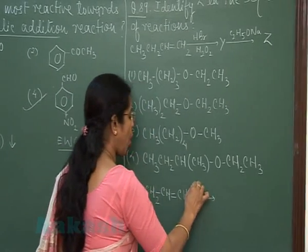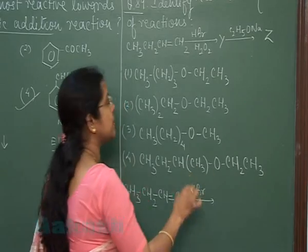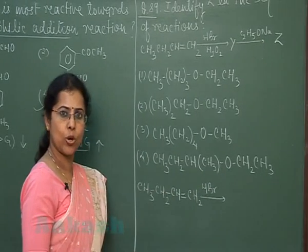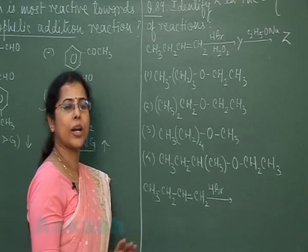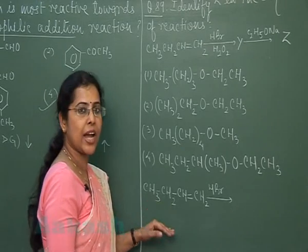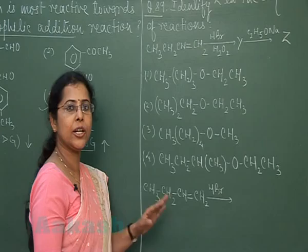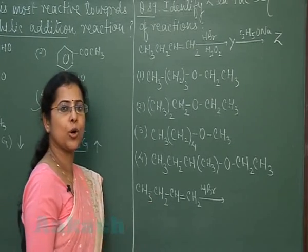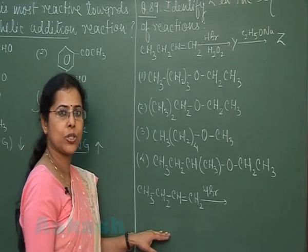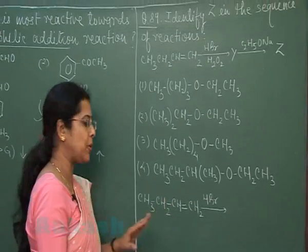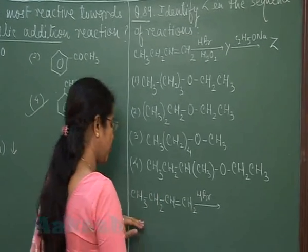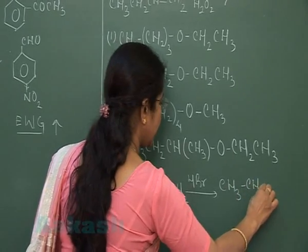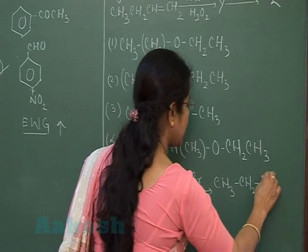Addition of HBr is taking place in presence of hydrogen peroxide. When an organic peroxide is present, the reaction takes place by anti-Markovnikov rule. So the product formed is CH₃CH₂CH₂CHBrCH₃ — wait, Markovnikov addition will take place and the compound Y obtained is CH₃CH₂CH(Br)CH₃ type structure.